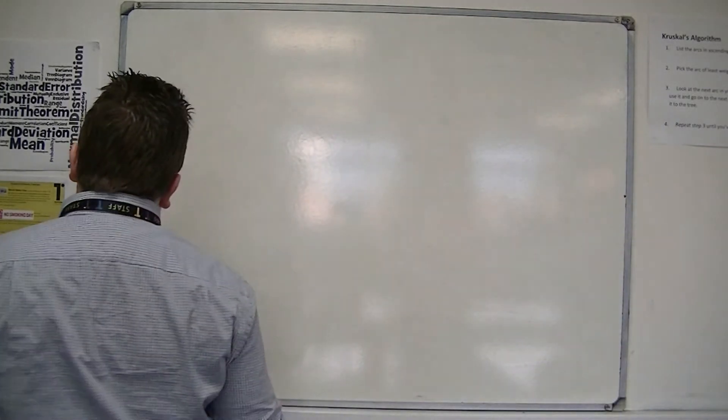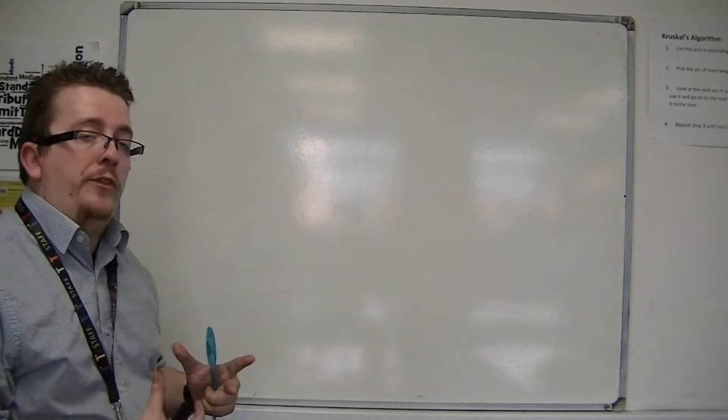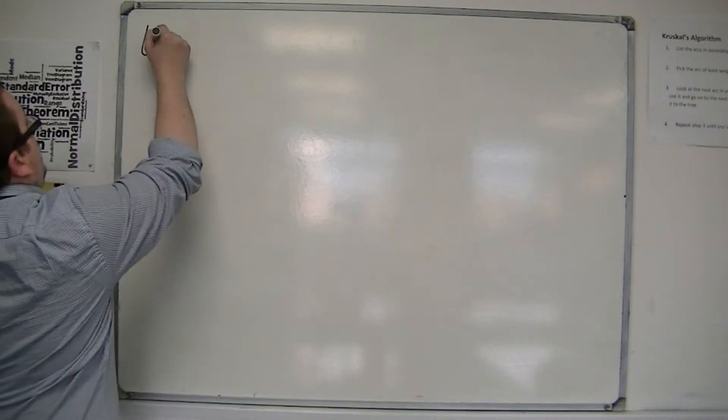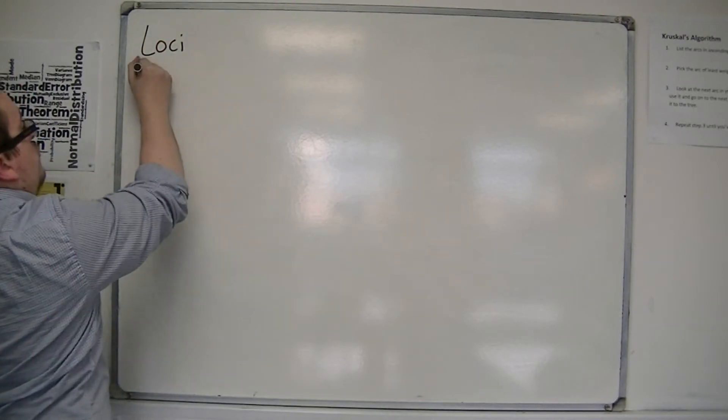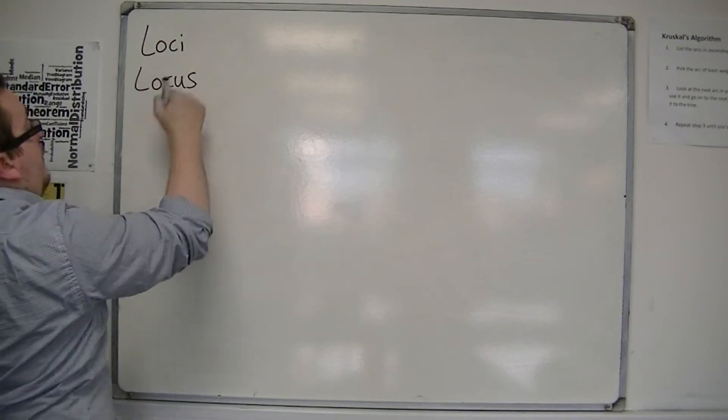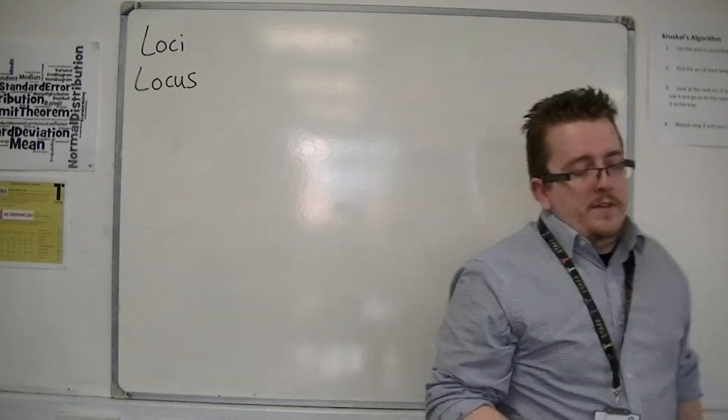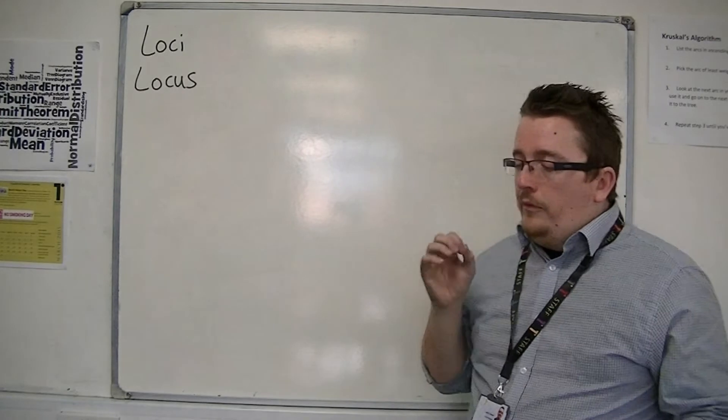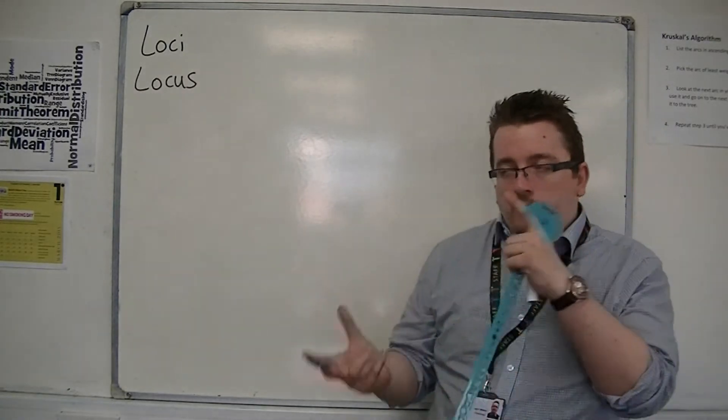So the first one is known as the locus of a point. Loci, spelled L-O-C-I, is the plural of locus, L-O-C-U-S. And if I'm looking at the locus of a point, what I'm saying is, well, a good analogy of it...